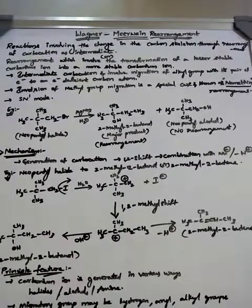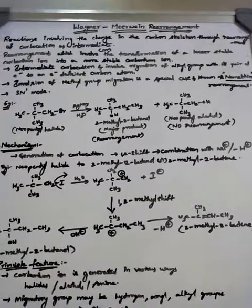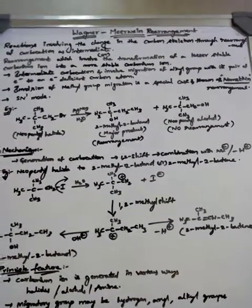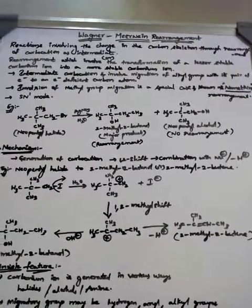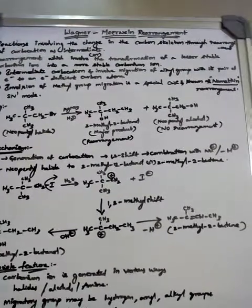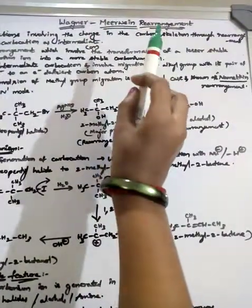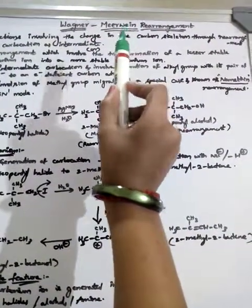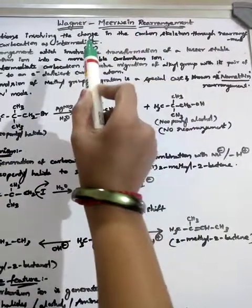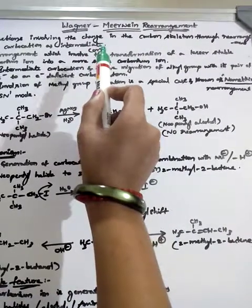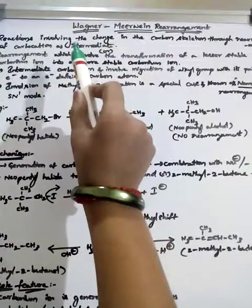Welcome. In this video I am covering another rearrangement topic in chemistry: Wagner-Meerwein rearrangement. Rearrangement means the reactions in which a change is seen in the carbon skeleton through rearrangement of a carbocation as intermediate. Such reactions are called Wagner-Meerwein rearrangement.